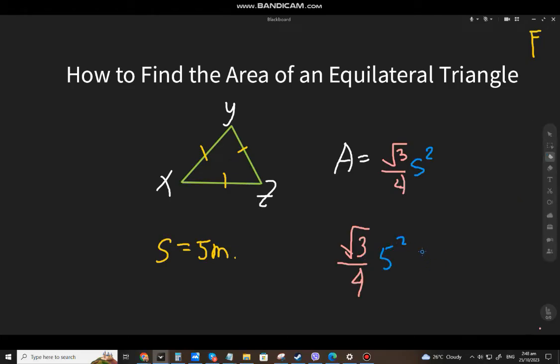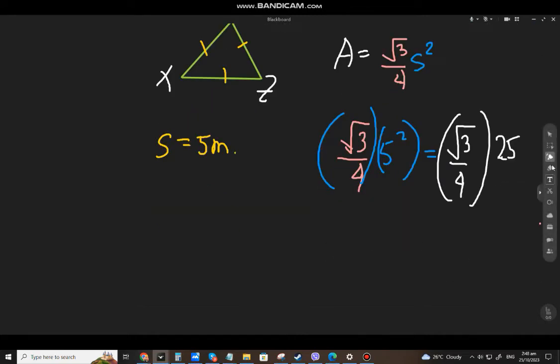So if you multiply that, that will be square root of 3 over 4 times 25. So that will be, simplify: 25 square root of 3 over 4. You can't simplify it further, but if you want to simplify the answer.